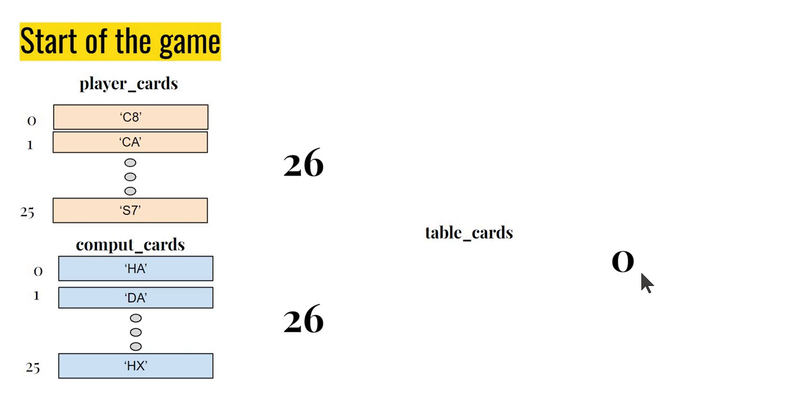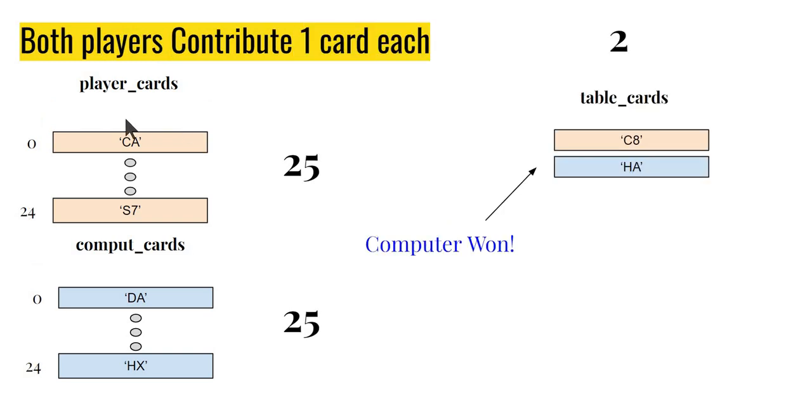Both players contribute one card each. For example, player played the top card - it happened to be 8 of clubs. Computer played the top card - it happened to be Ace of hearts.